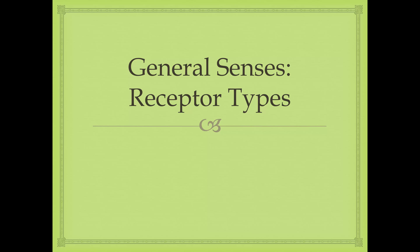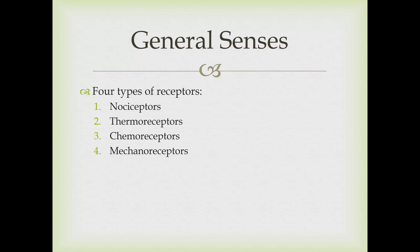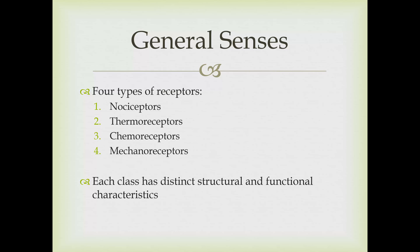In this section, we'll look at the different types of receptors for the general senses. There are four broad classifications: nociceptors, thermoreceptors, chemoreceptors, and mechanoreceptors. Each has its own distinct structural and functional characteristics that we'll walk through one by one.